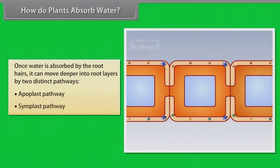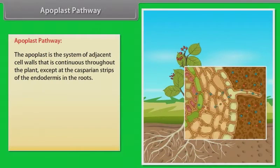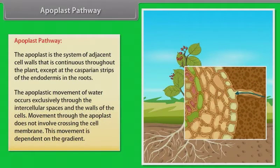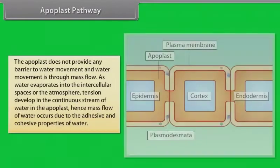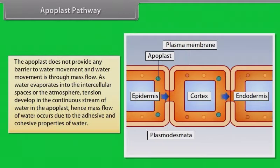These two pathways are the apoplast pathway and the symplast pathway. The apoplast pathway is the system of adjacent cell walls that is continuous throughout the plant, except at the Casparian strips of the endodermis in the roots. The apoplastic movement of water occurs exclusively through the intercellular spaces and the walls of the cells. Movement through the apoplast does not involve crossing the cell membrane and is dependent on the gradient. The apoplast does not provide any barrier to water movement and water movement is through mass flow. As water evaporates into the intercellular spaces or the atmosphere, tension develops in the continuous stream of water in the apoplast, and mass flow of water occurs due to the adhesive and cohesive properties of water.